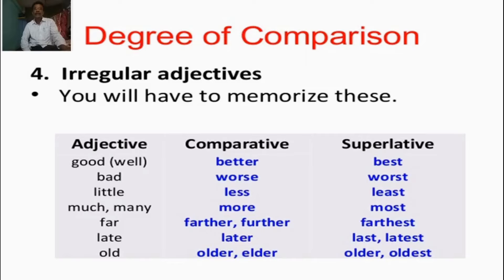Irregular adjectives — you will have to memorize these. Good or well — comparative: better — superlative: best. Bad — comparative: worse — superlative: worst. Little — comparative: less — superlative: least. Much or many — comparative: more — superlative: most. Far — comparative: farther — superlative: farthest. Late — comparative: later — superlative: last or latest. Old — comparative: older or elder — superlative: oldest.